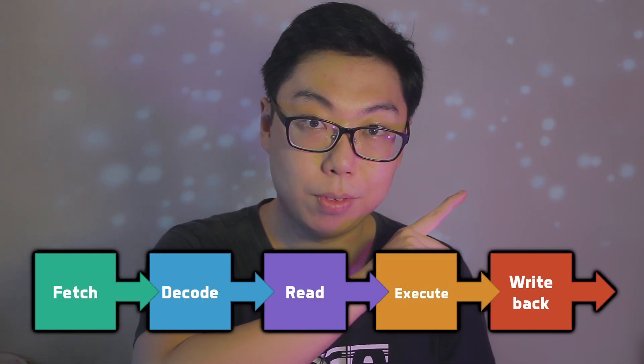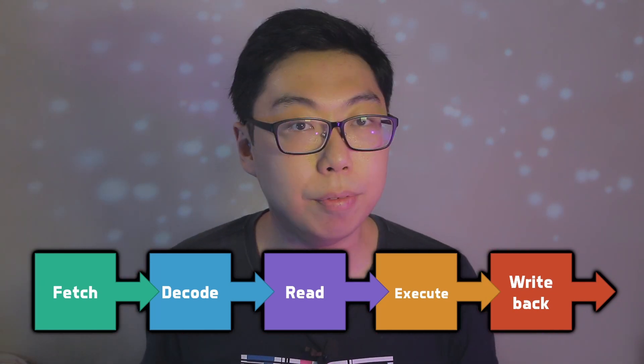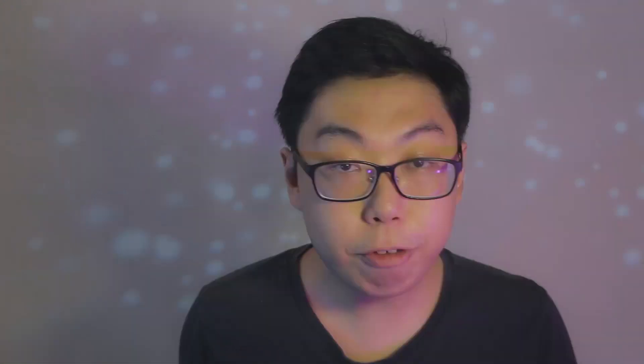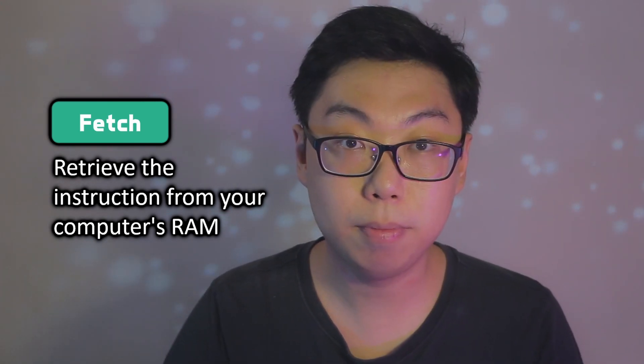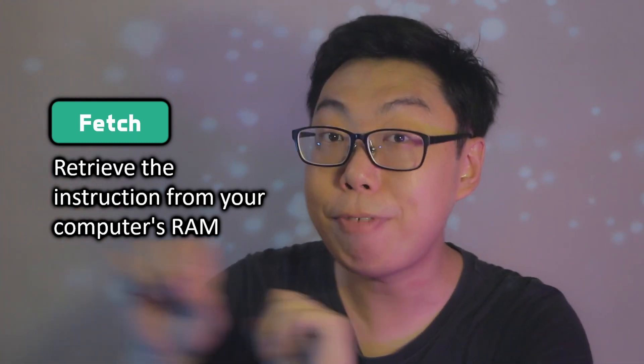One basic five-step model to explain this is fetch, decode, read, execute, write back. What you find is that to execute any instruction, some combination of these five subtasks must happen. Here's what they mean, fetching involves pulling the actual instruction out of RAM, that is the random access memory of your computer. Yeah, instructions don't just fall into your lap for free, the CPU must fetch them.